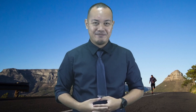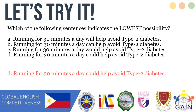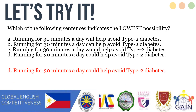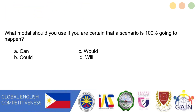Now that you've learned how to express yourself using modals, let's try some activities to test your knowledge. Which of the following sentences indicates the lowest possibility? The correct answer is: 'Running for 30 minutes a day could help avoid type 2 diabetes.' What modal should you use if you are certain that a scenario is 100% going to happen? The correct answer is: will.